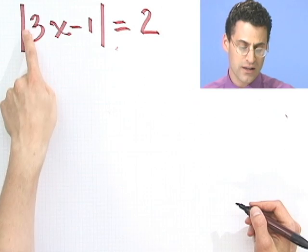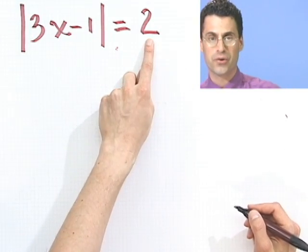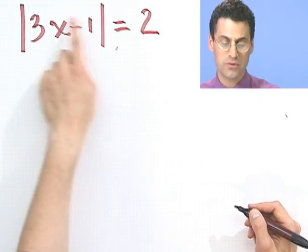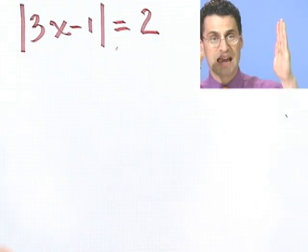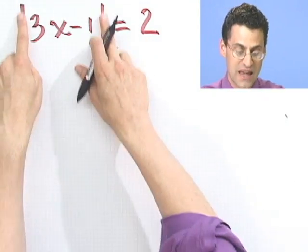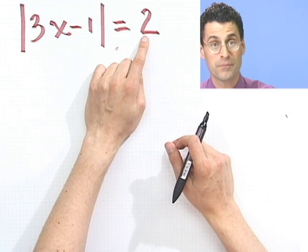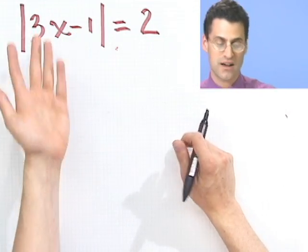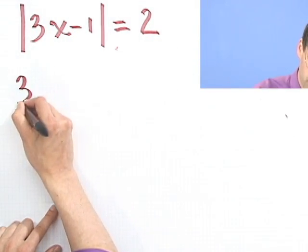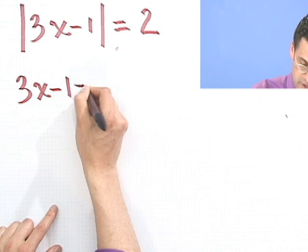One is, first of all, if the inside equals 2, and the other possibility is if the inside equals negative 2. Because notice when I take absolute values, in both cases, the absolute value will be 2. Since the inside is blind to negative signs, we have to consider two cases. 3x minus 1 equals 2.